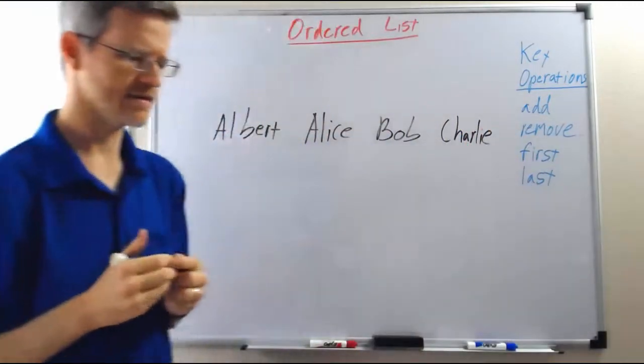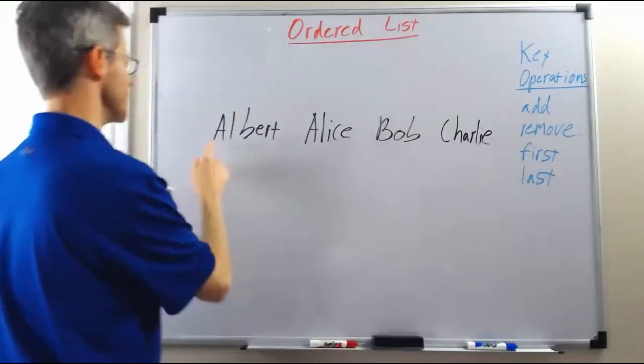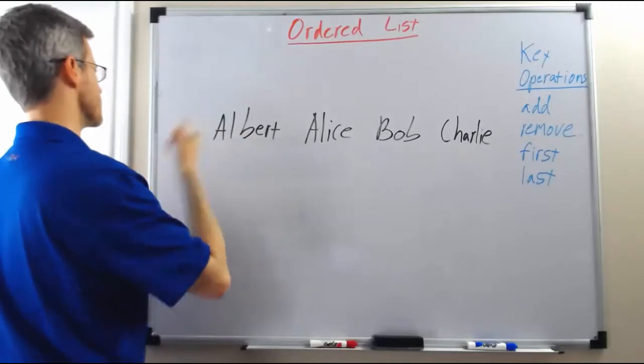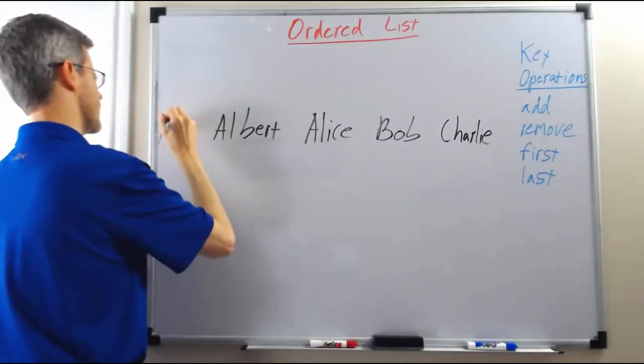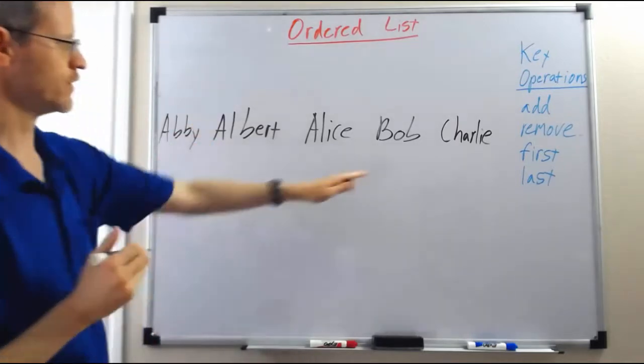And then lastly, let's suppose we add the name Abby. Abby needs to go prior to Albert in alphabetical order, so Abby will go over here.